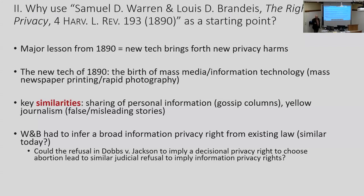The major lesson from 1890: new tech brings new privacy harms. That's still true today. The new tech of 1890 was the birth of mass media — newspapers, mass printing, rapid photography. Key similarities: sharing personal information in gossip columns, yellow journalism, false or misleading stories. We still have those same problems today — the temptation to publish false or misleading stories, clickbait. Warren and Brandeis had to infer a broad information privacy right from existing law, and that's similar today because we don't have an overarching law.